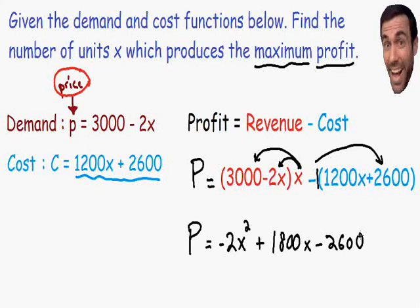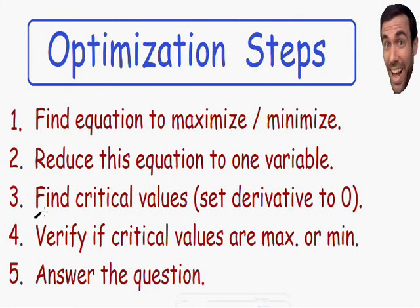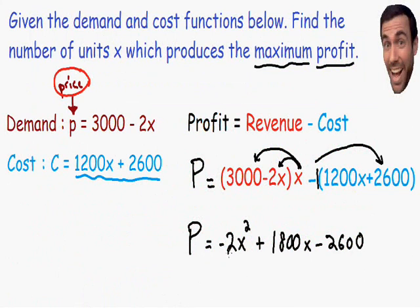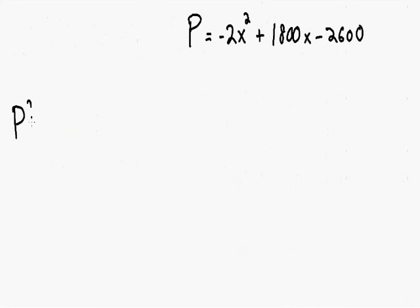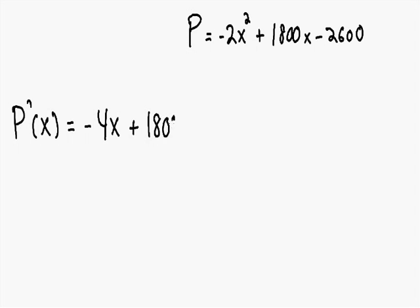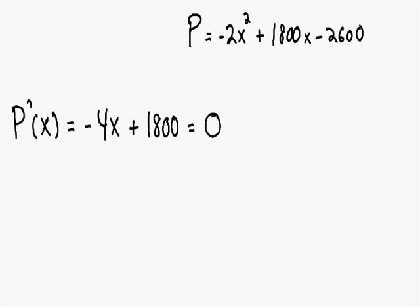Now we are ready for step number 3: find the critical values, which means take the derivative and set it equal to zero. The derivative of the profit with respect to x equals the derivative of negative 2x squared, which is negative 4x, plus the derivative of 1800x, which is 1800, plus the derivative of negative 2600, which is zero. So our derivative is negative 4x plus 1800, and we set it equal to zero to find the critical values.